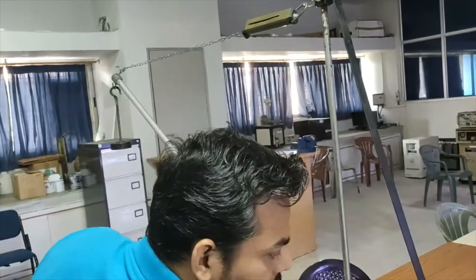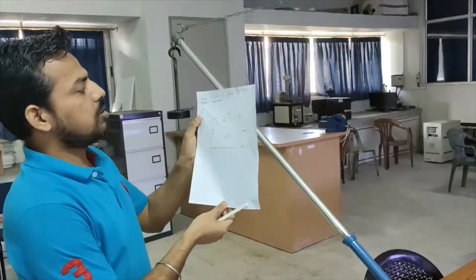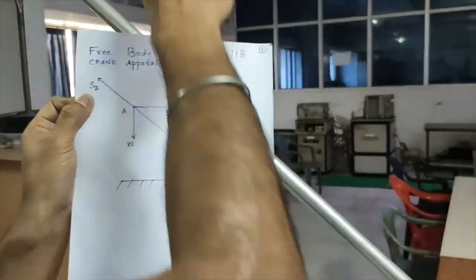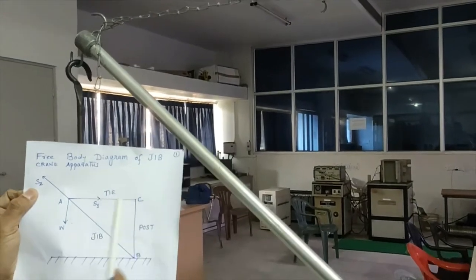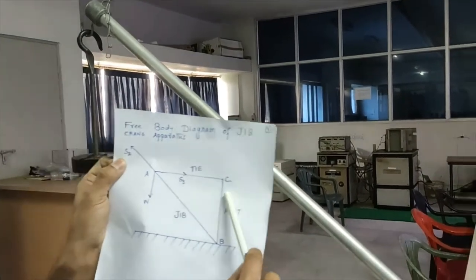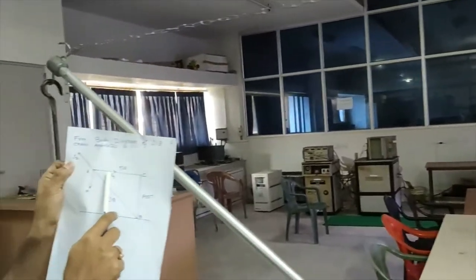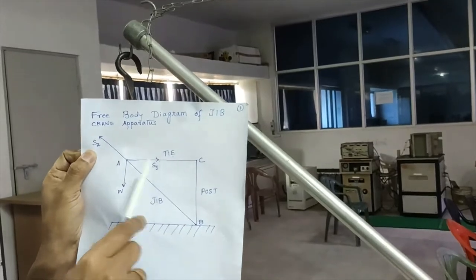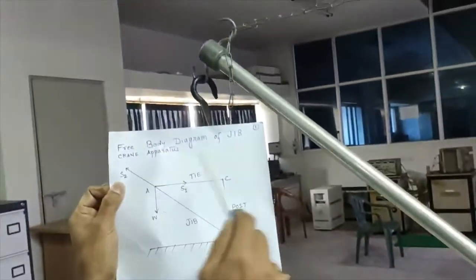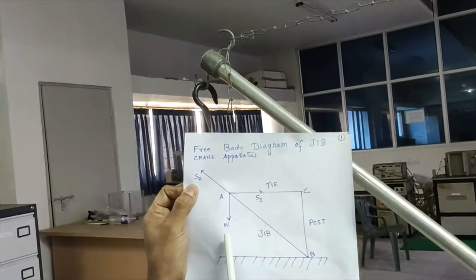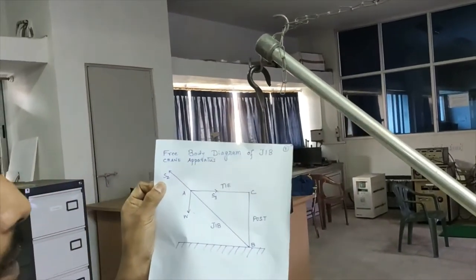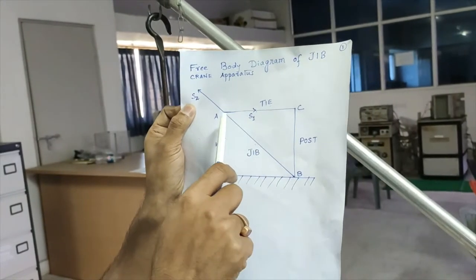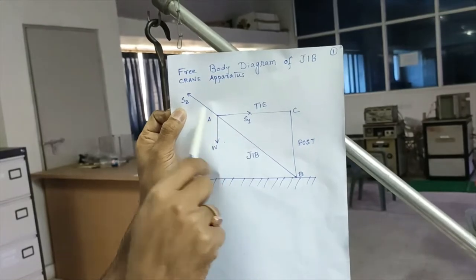This is the free body diagram of Zip Crane apparatus. This is the tie we are talking about and this is the jib, this is the post. S1, the tensile force, would be exerted here. This is S2, it would be exerted here, the compressive force, and this is W, the weight lifted. This three force system would try to bring the point A in equilibrium.